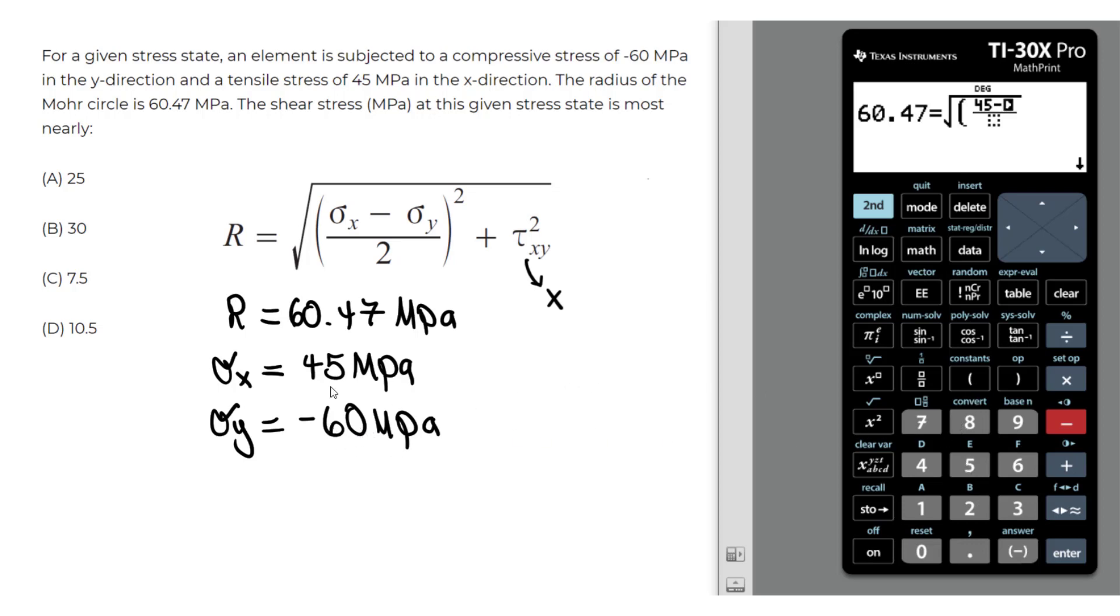So what I like to do is keep that negative 60 in parenthesis, like that. So 45 minus negative 60, negative times a negative will essentially give us a positive. But let's just plug it in how it is, divided by 2 on the bottom. Then we close the parenthesis. Make sure you close it and we have to square all of that.